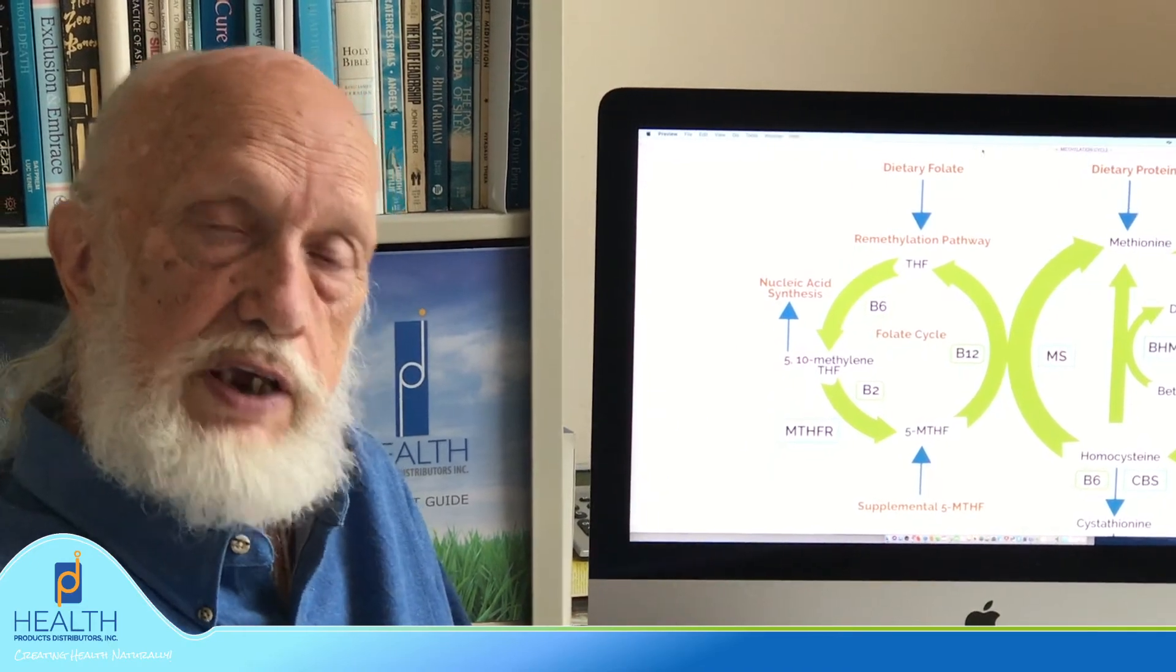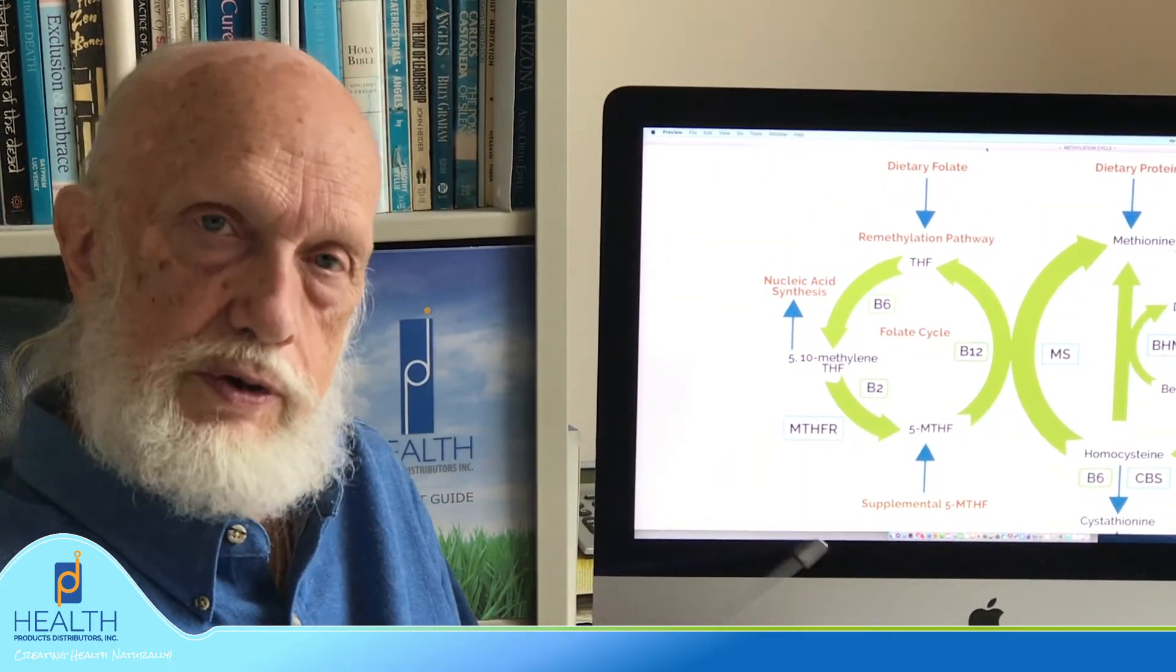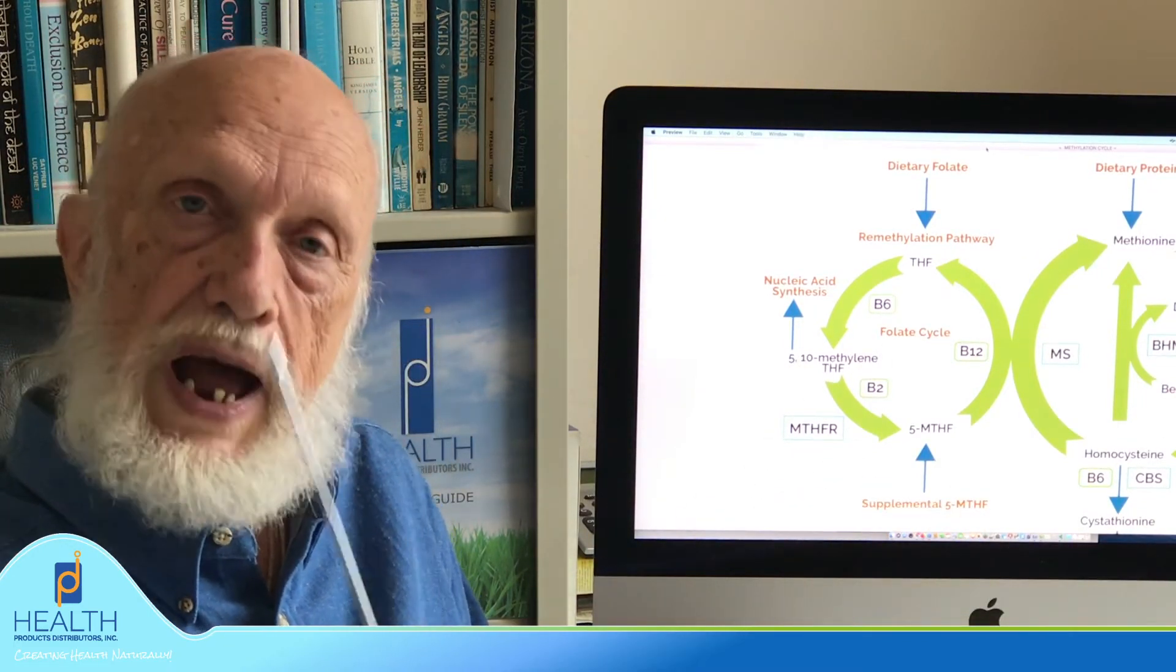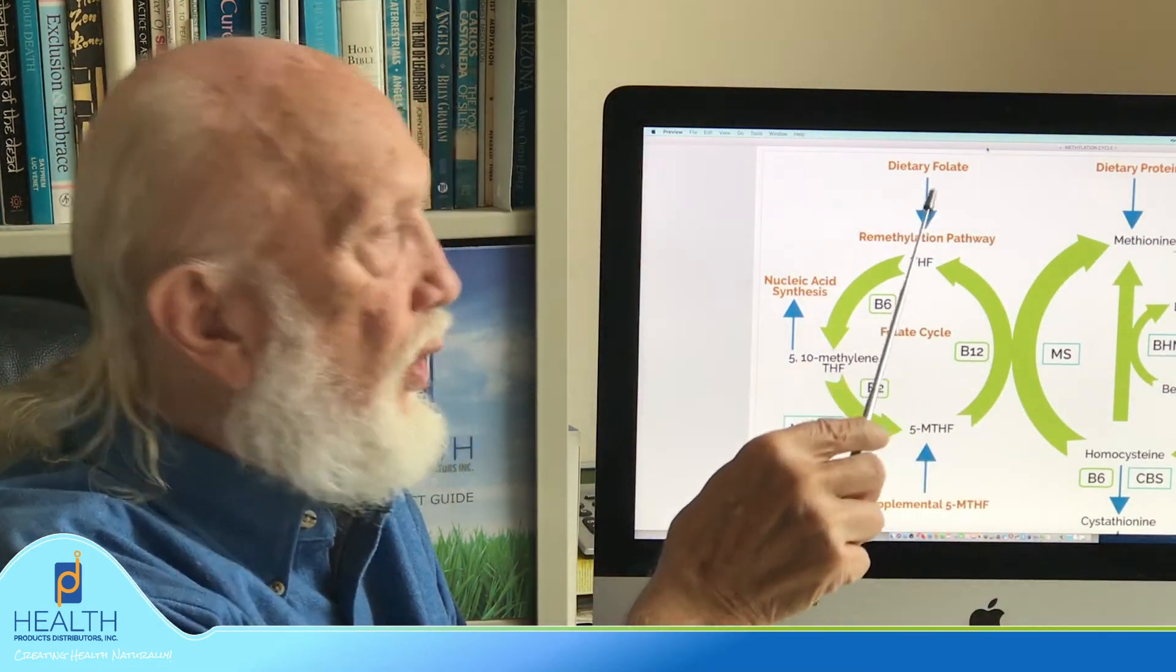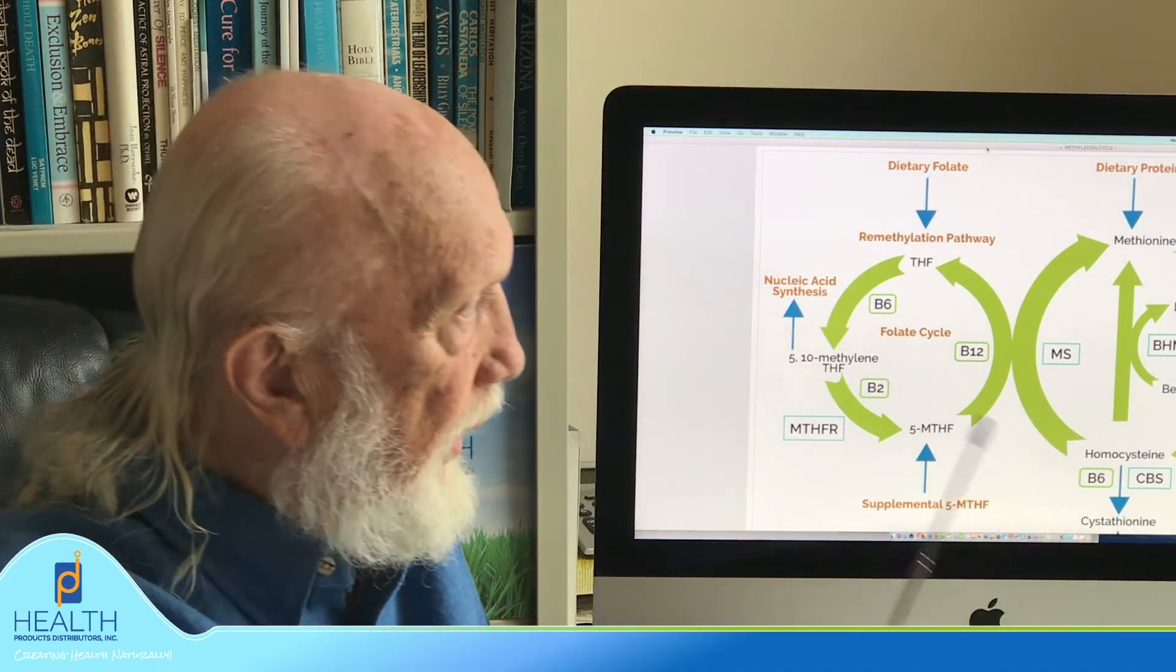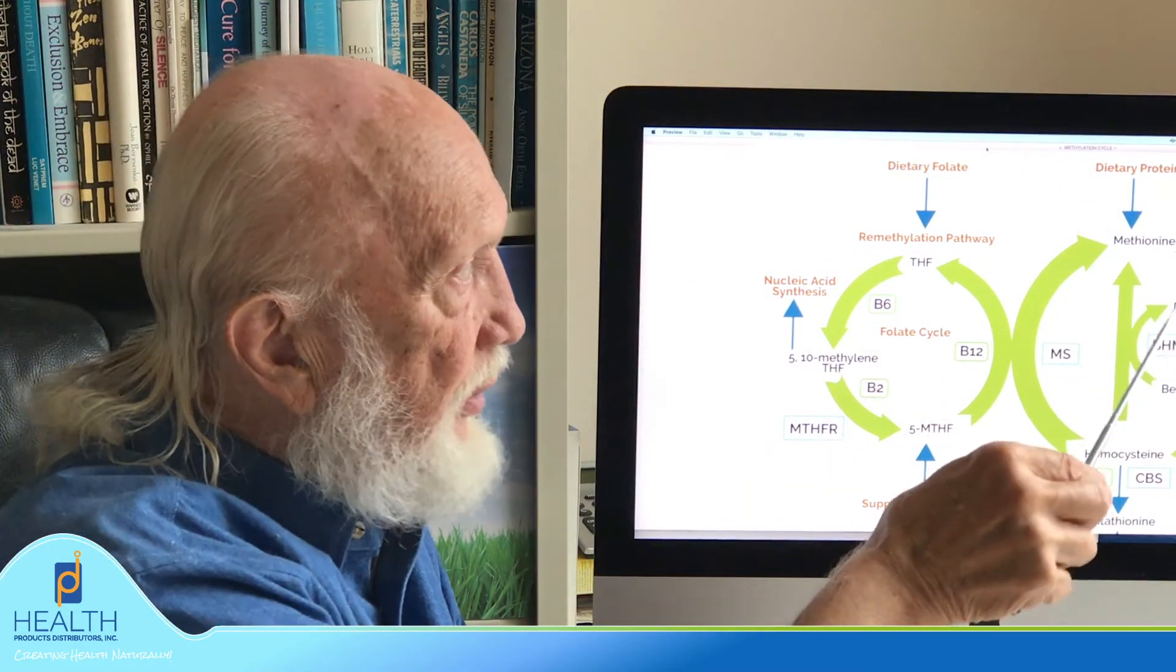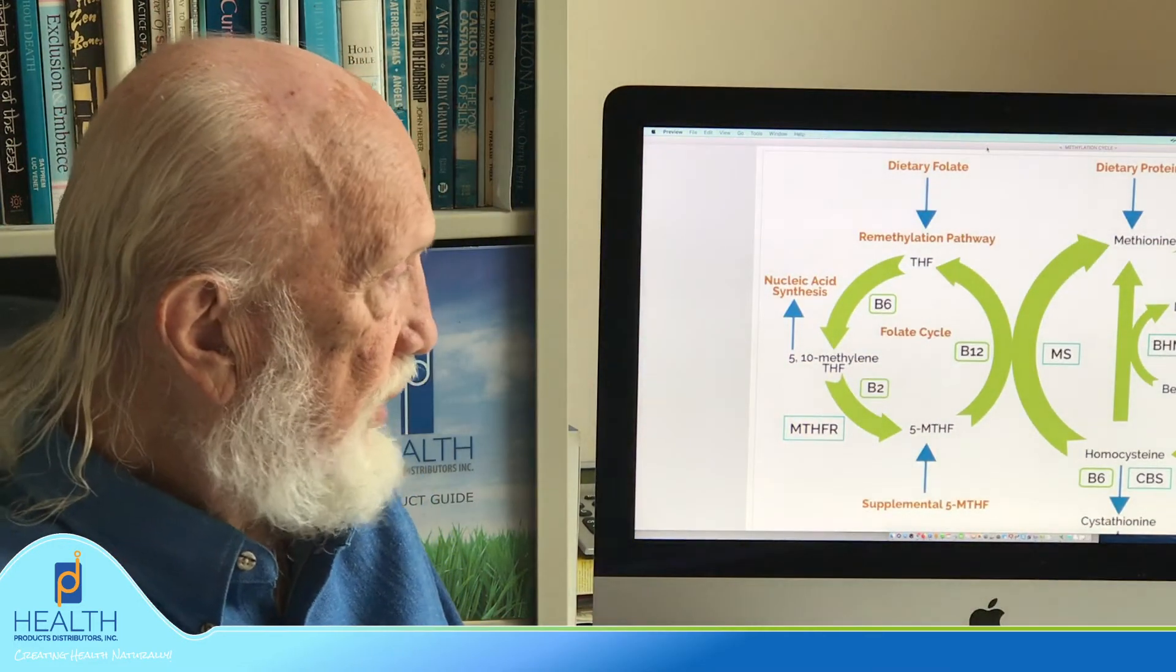What you see from this whole thing is that there are cofactors and substances you need to make this whole cycle work that come from dietary input. Methionine, folate, B6, B2, betaine—there's magnesium and there's zinc that are needed in this pathway. I didn't want to get into too many details.